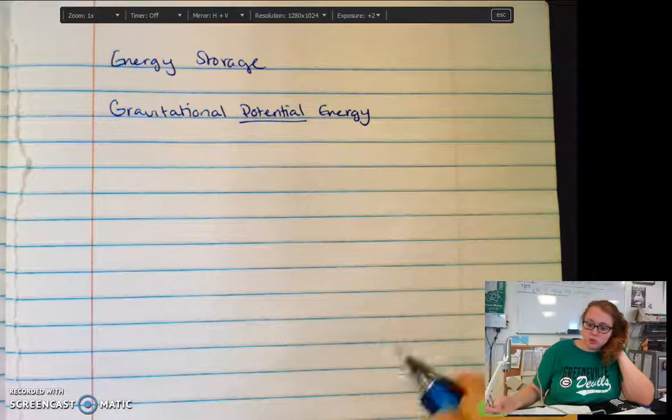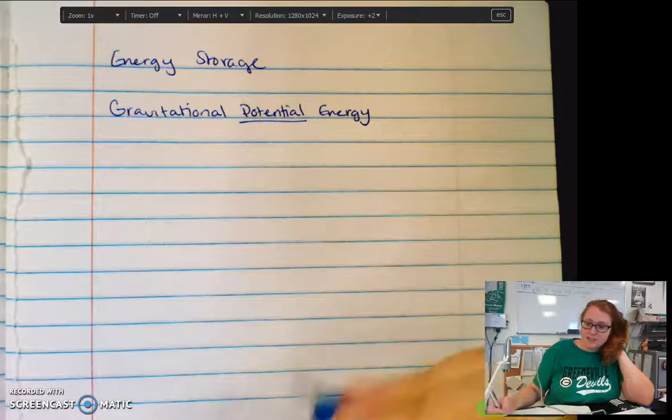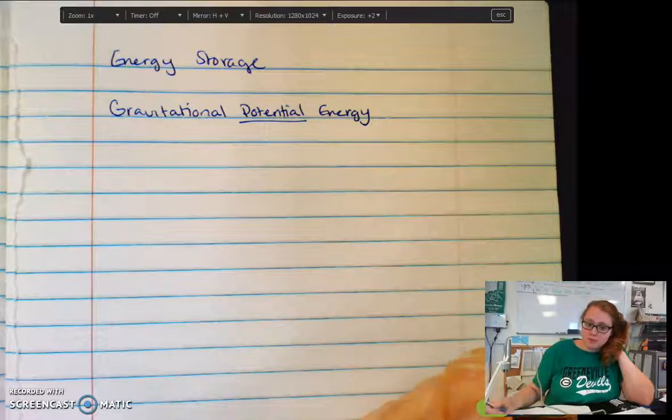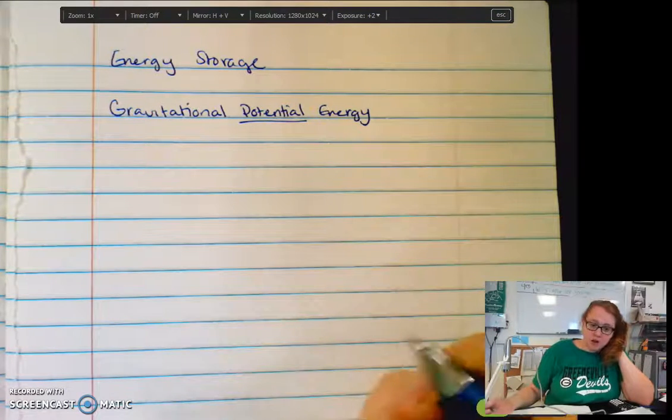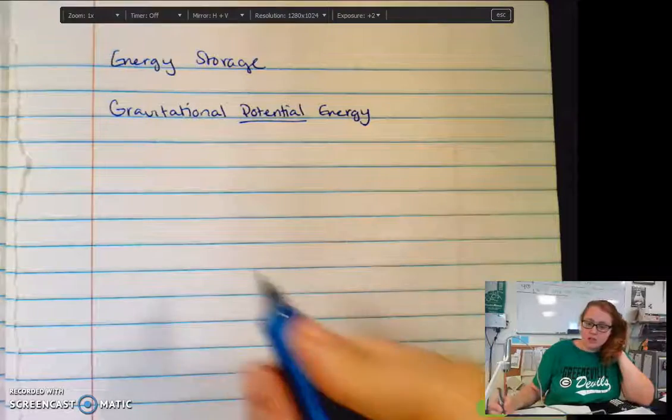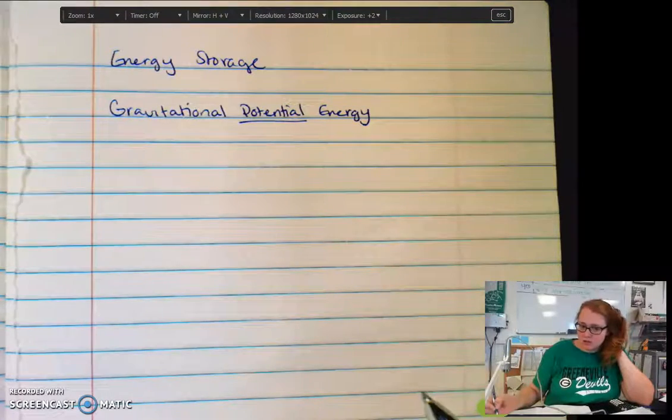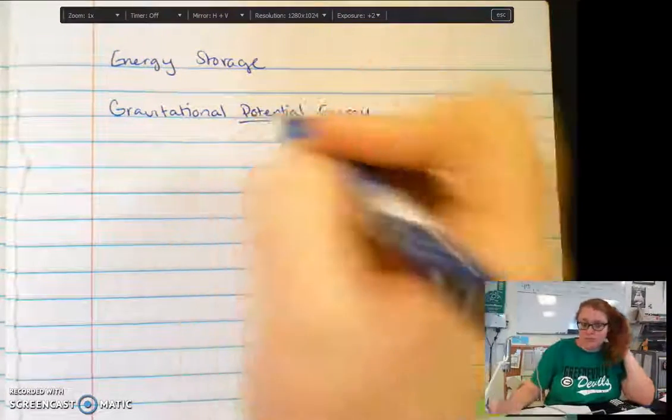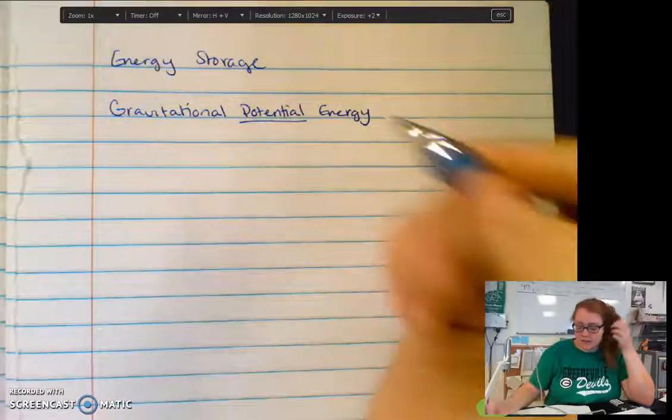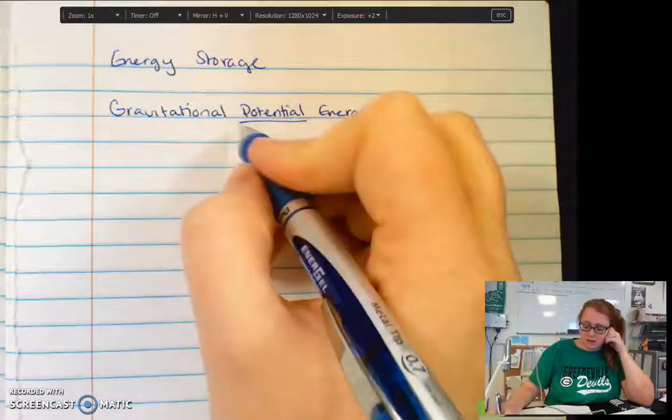We call this a potential energy because it's a way you store energy. If I raise a ball up three meters, then it has the potential to fall. If it has the potential to gain kinetic energy through falling from some height, then it has gravitational potential energy.